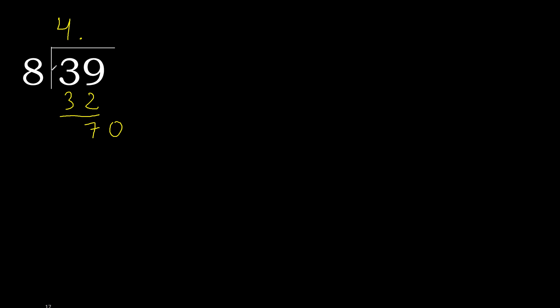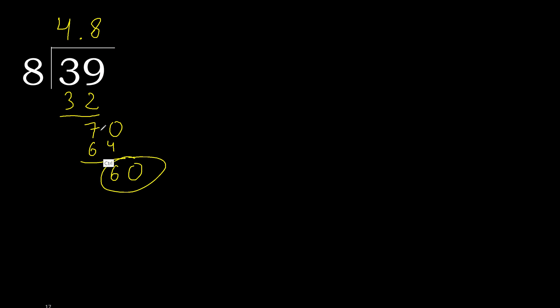8 multiplied by 9: 72 is greater. Multiply by 8: 64 is not greater. Subtract. Complete: 0 point. 60.